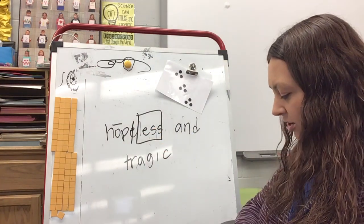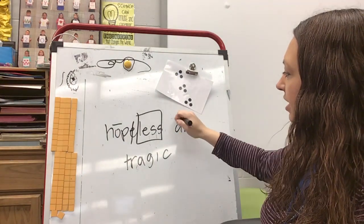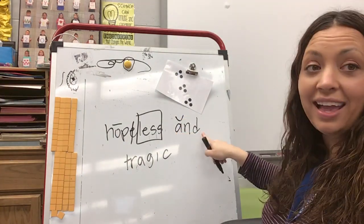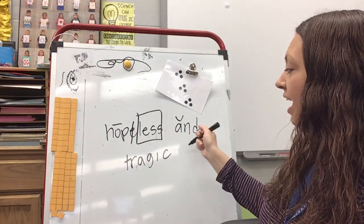And then what about our next word? We have an A in front of an N, so it's short, so AND. Hopeless, AND.